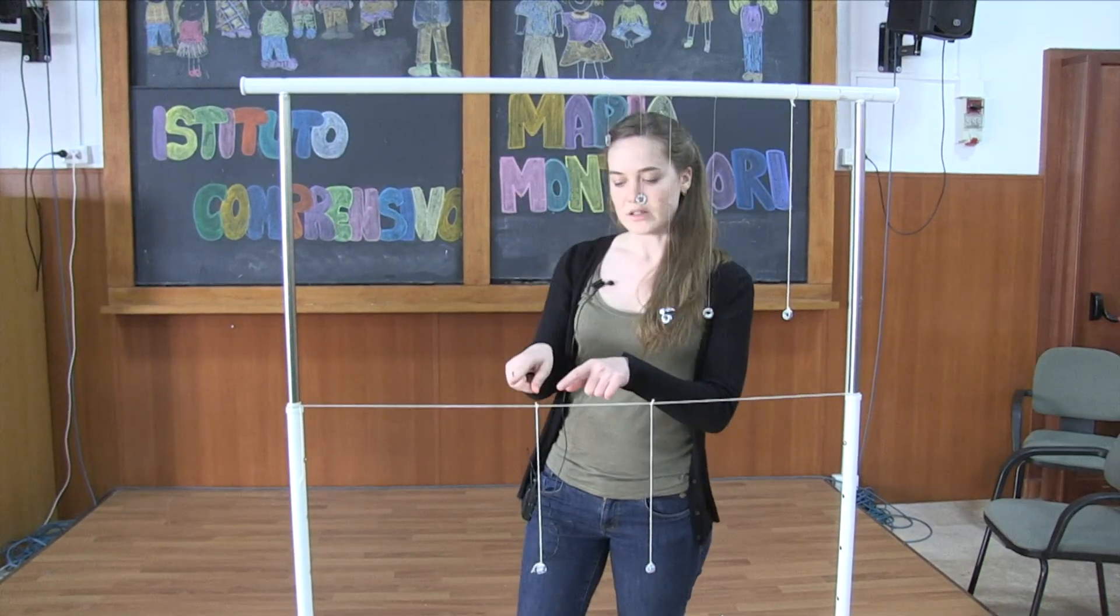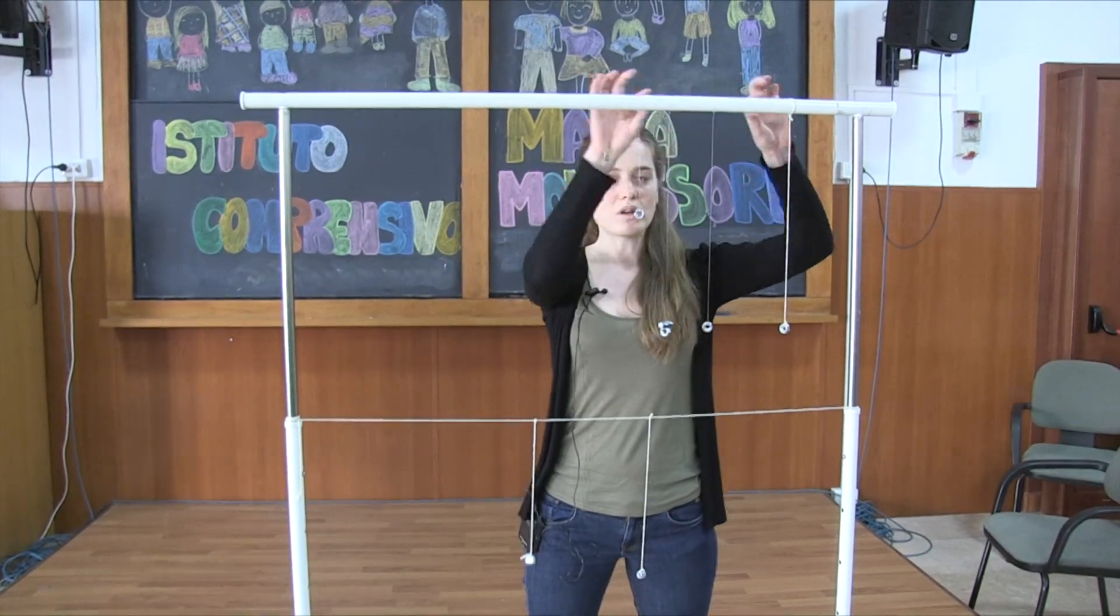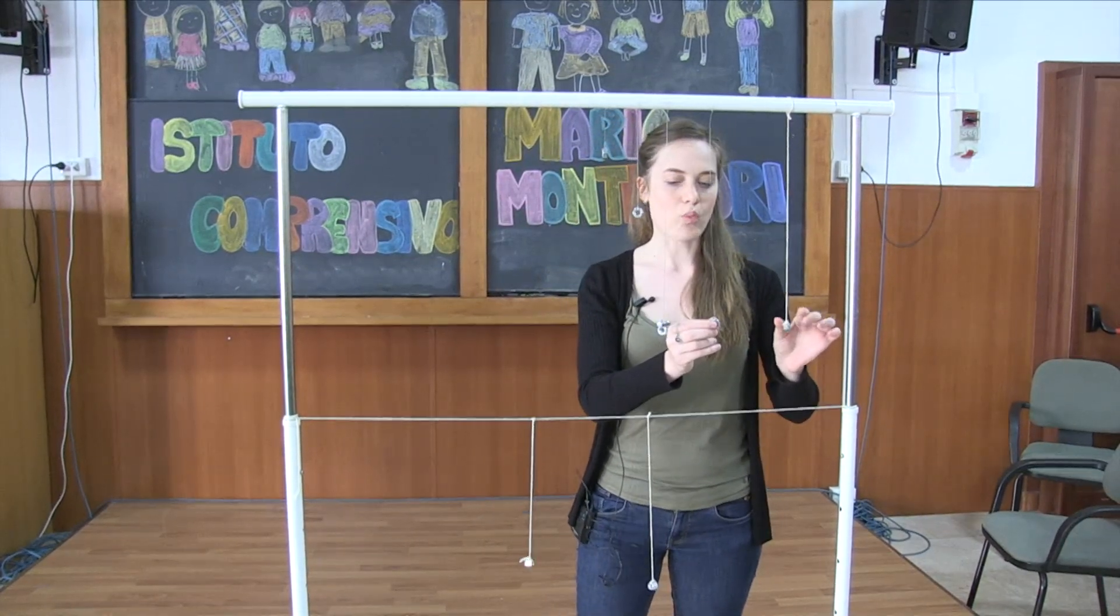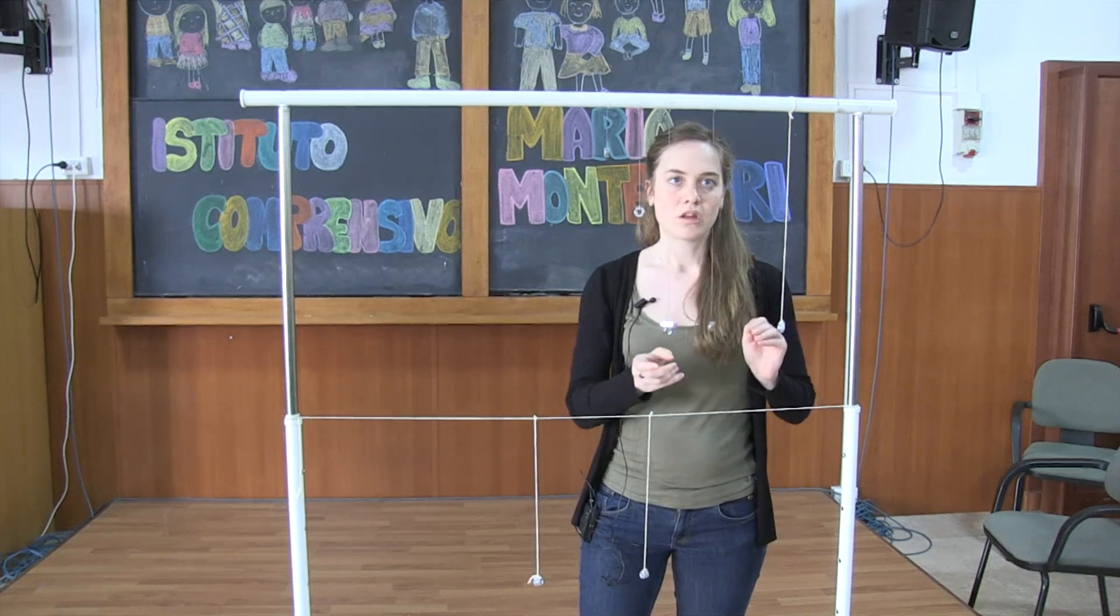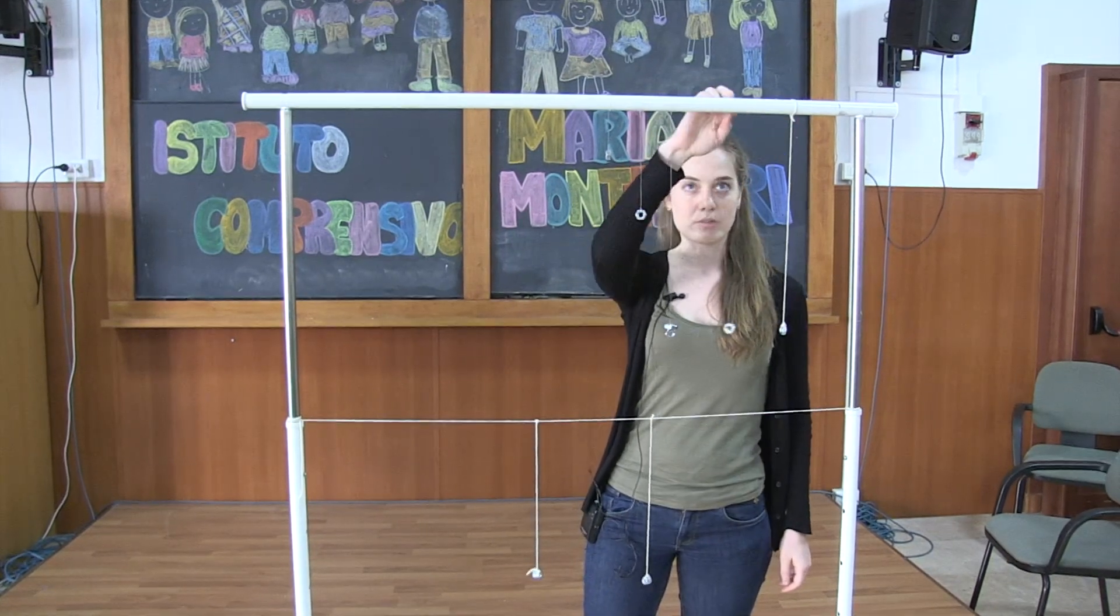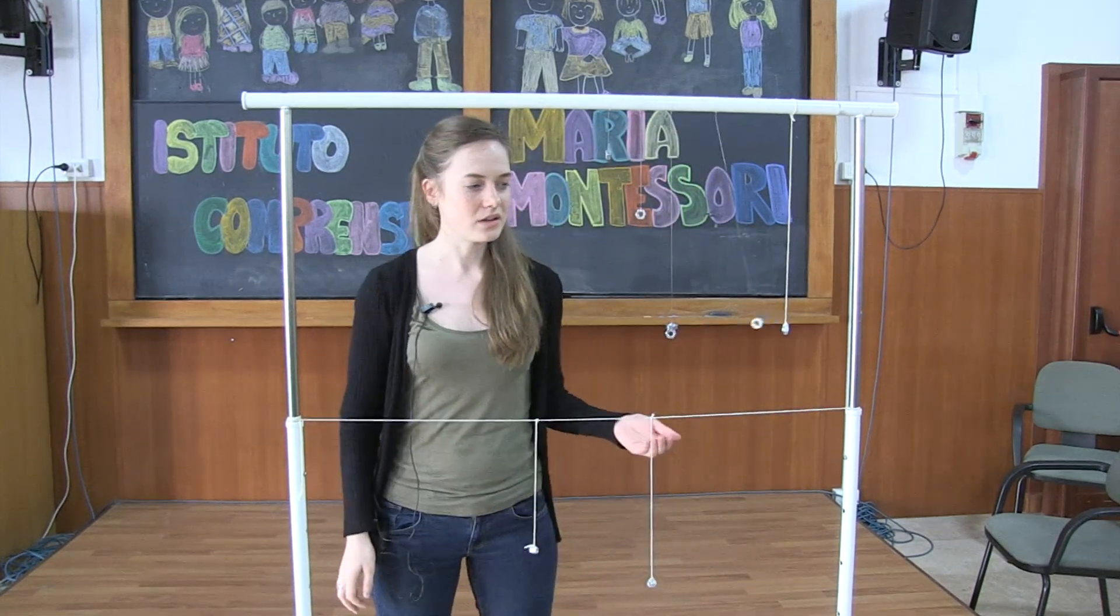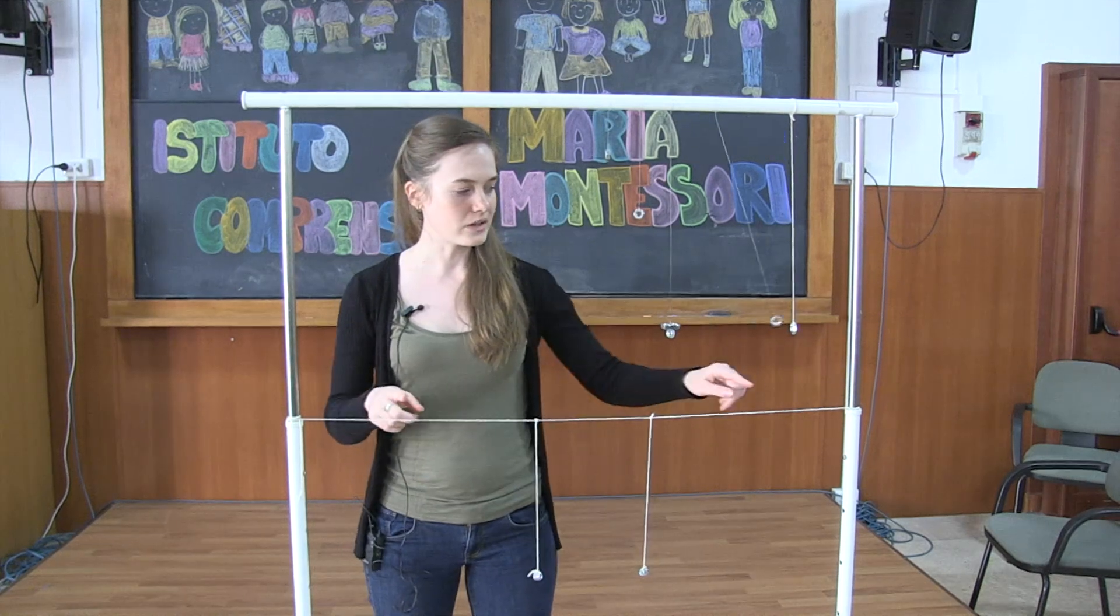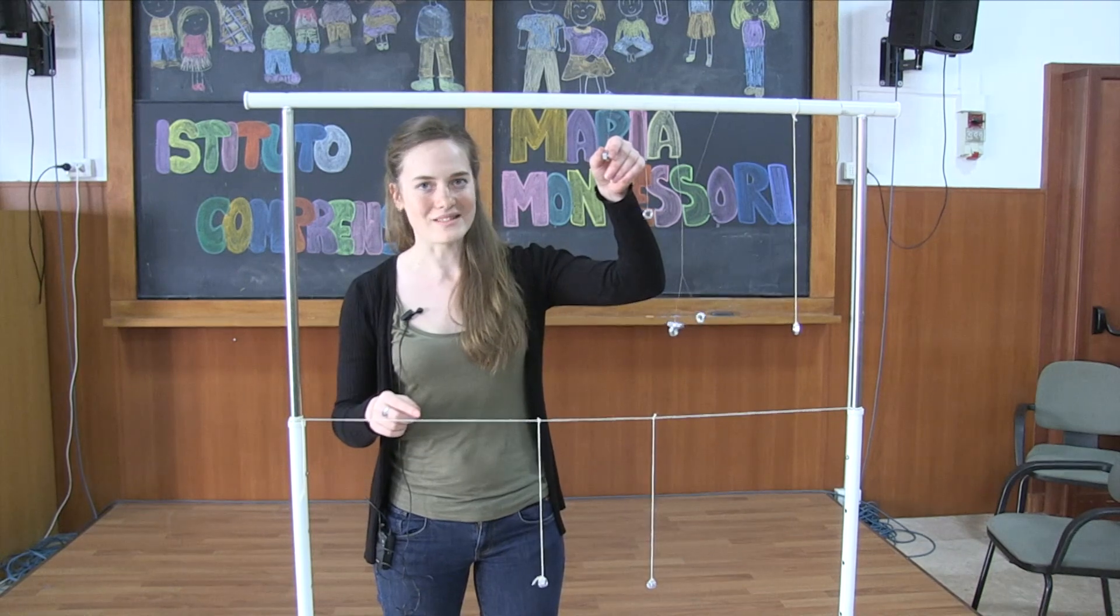This kind of resonance doesn't happen when the pole is rigid. For example, here if I put one pendulum in motion, the energy cannot transfer from one pendulum to the other because the pole is rigid—there's no torque. And that's how you can make a simple experiment out of different wires, fishing lines, and metal nuts.